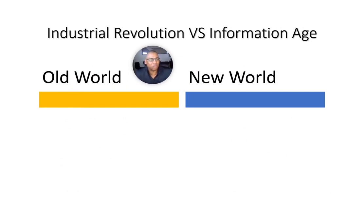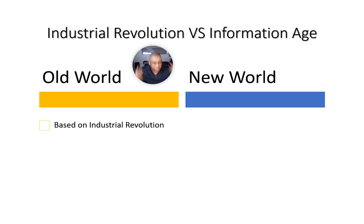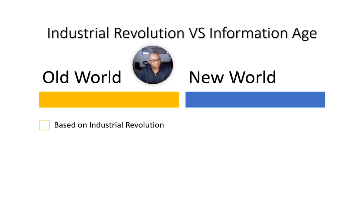In the old world, when computers first appeared, everything on your computer mimicked what we'd learned from the Industrial Revolution. In the industrial era, content was written on paper and filed away. When computers came, they mimicked that: you had a desktop, Word created documents, paper went into manila folders in file cabinets, and computers gave us folder structures and file managers. Everything mimicked the Industrial Revolution.